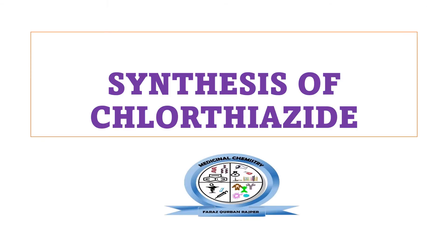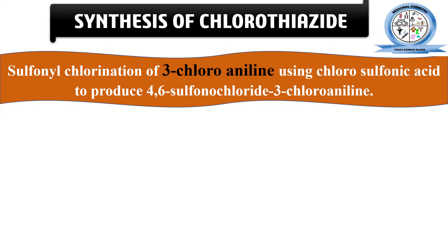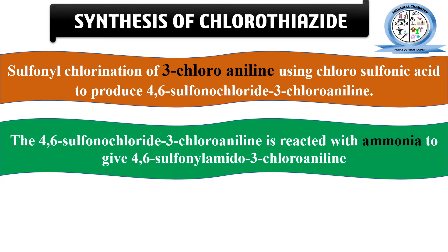Now let's look at the synthesis of chlorothiazide. In the first step, sulfonyl chlorination of 3-chloroaniline occurs using chlorosulfonic acid to produce 4,6-disulfonyl chloride 3-chloroaniline. Basically, 3-chloroaniline is used as the starting material. It is reacted with chlorosulfonic acid, which causes sulfonyl chlorination, and the resultant product is 4,6-disulfonyl chloride 3-chloroaniline.